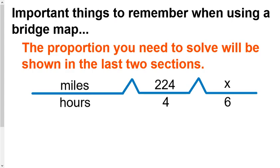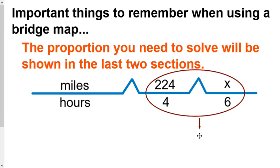When we want to solve this, it's important to remember that the proportion you need to solve is shown in the last two sections. When you look at those two sections, that gives you the proportion. This one gives us the proportion that the ratio of 224 to 4 is equal to what number to 6. That's what we're solving.